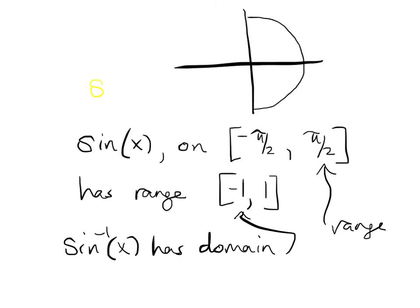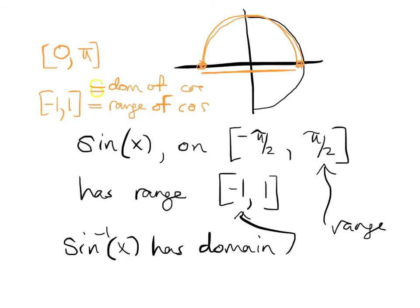Same exact discussion would hold for cosine, except cosine is going to look at this part of the circle. Because on this part of the circle, we're going to have, what, 0 to pi. And the x-coordinates will range from negative 1 to 1. Right? So this is the range of cosine, which is the domain of cosine inverse. This is part of the domain of cosine.